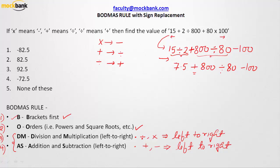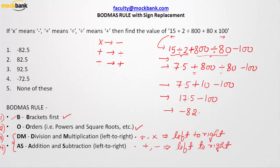Now we have addition, subtraction, and division remaining. Since division has a higher rank than addition and subtraction, we solve it first: 800 ÷ 80 = 10. The expression becomes 7.5 + 10 − 100. Addition and subtraction have equal rank, so going left to right, we solve 7.5 + 10 = 17.5, then 17.5 − 100 = −82.50. Option number one is correct.